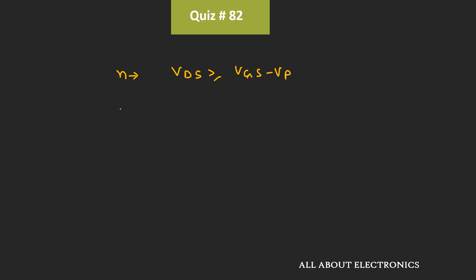If we see the case of the p-channel JFET, then for the p-channel JFET, this Vds is negative, while the Vgs and the Vp are positive. That means for the p-channel JFET, whenever this Vds is less than or equal to Vgs minus Vp, at that time the JFET operates in the saturation region.